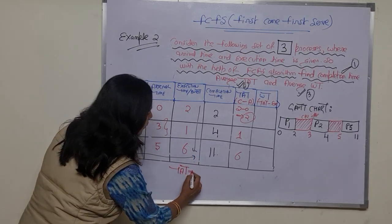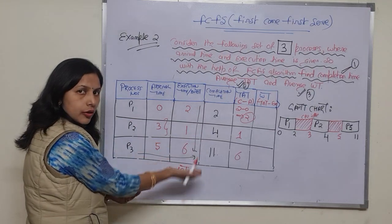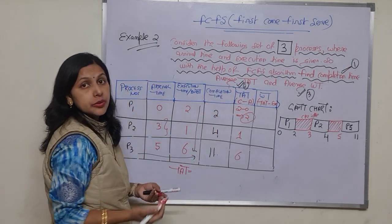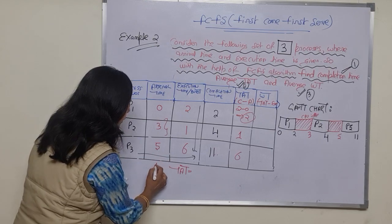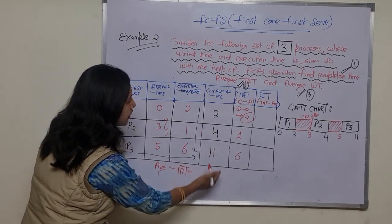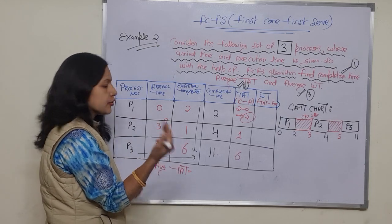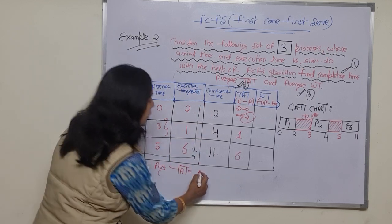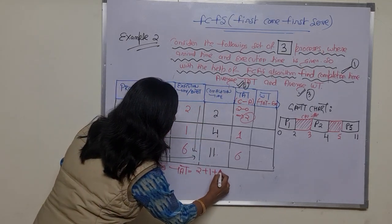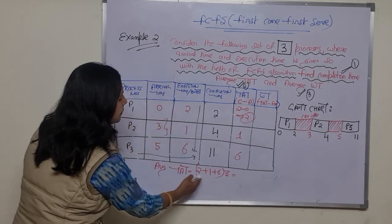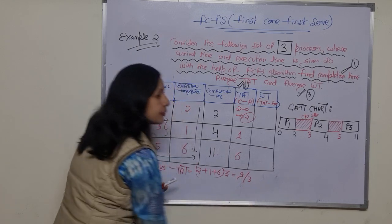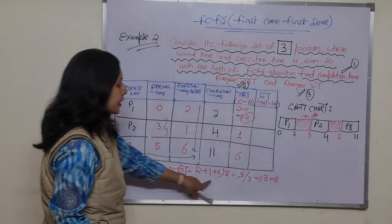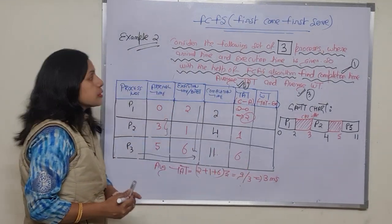The question asks for the average turnaround time. To find it, we add the turnaround times of all processes and divide by the number of processes: 2 plus 1 plus 6 divided by 3 equals 9 divided by 3, which is 3 microseconds. So the average turnaround time is 3 microseconds.